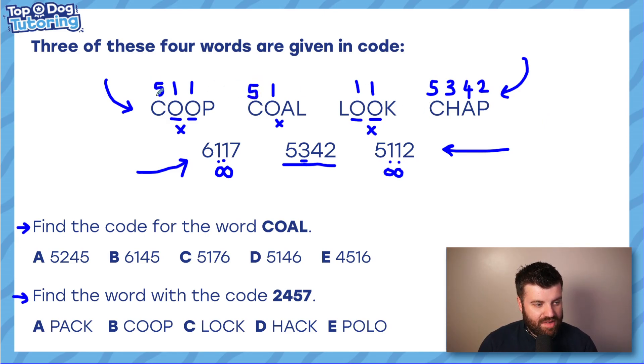Anything with a C is five. So I'm going to stick in all the fives for C. P I know is two. So coop ends in a two, five, one, one, two. And then looking over here, A is four. So coal has to have a four in it. And then we already know five, one, four, something is going to be coal. Looking down here, we know that coop is five, one, one, two. So that means that six, one, seven, seven is look. So we can put our six here and our seven there, which means we're left with coal with an L at the end, which is a six.